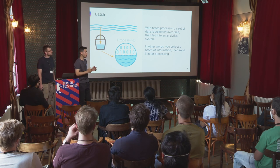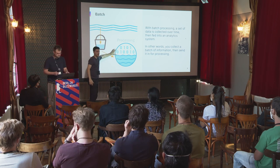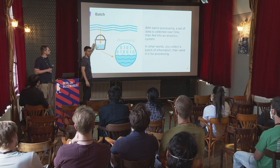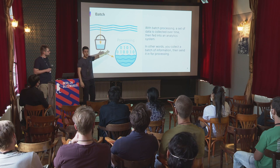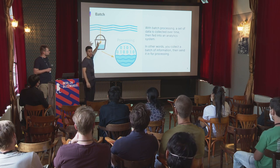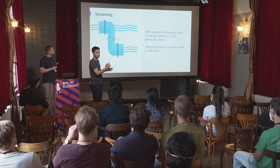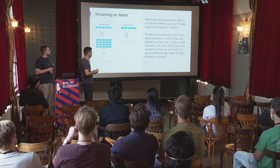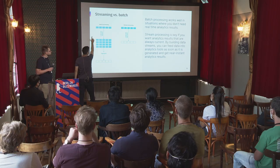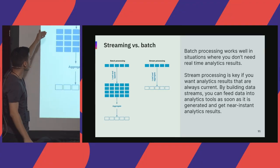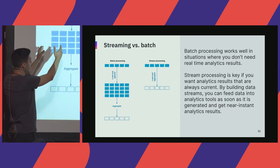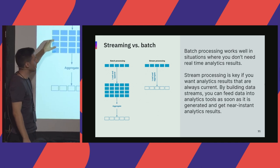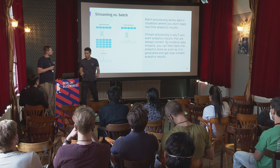Batch processing is useful because you have historic data available when your transformations need it, but you're spending resources on loading and saving, and you're inserting lag between processing and when the data was generated. With stream processing, you build up a pipe and process data piece by piece as it's generated. For aggregation operations, batch requires an intermediate load step, spending extra resources and inserting delay — delay you don't need with stream processing.